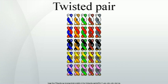Twisting the pairs counters this effect — on each half twist, the wire nearest to the noise source is exchanged. Providing the interfering source remains uniform, or nearly so, over the distance of a single twist, the induced noise will remain common mode. Differential signaling also reduces electromagnetic radiation from the cable, along with the associated attenuation, allowing for greater distance between exchanges.